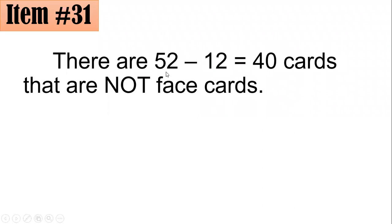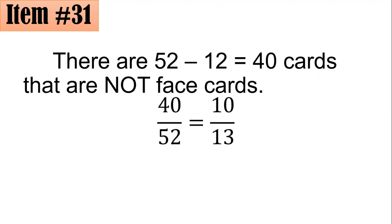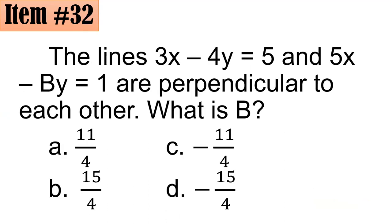In a standard deck of cards there are 52 cards, excluding the jokers. You have four kings, four queens, and four jacks, so that's 12 face cards. So there are 52 minus 12, which means 40 cards that are not face cards out of 52. Hence you have 40 over 52, which simplifies to 10/13 because you divide both by the GCF which is 4. If you answered C, correct — that's for item 31.